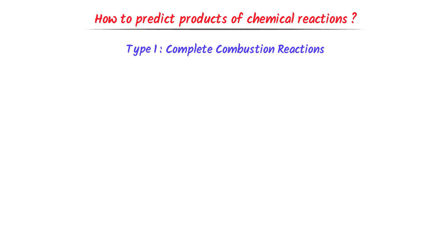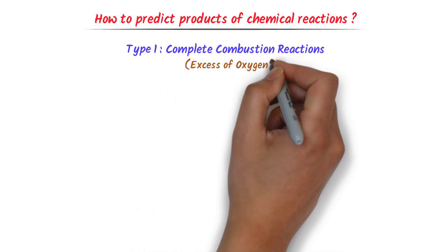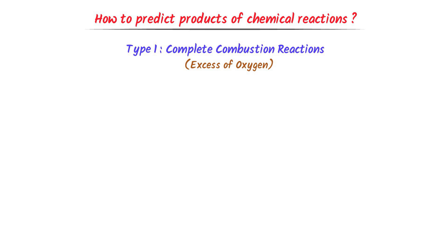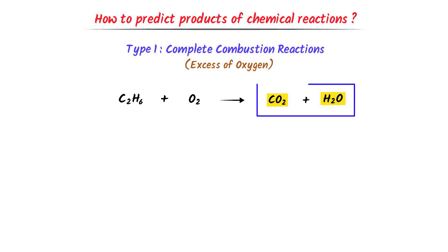These reactions are carried out in the presence of excess oxygen. For example, ethane reacts with oxygen gas. We will always get two products: carbon dioxide gas and water, H₂O. Remember that in case of combustion reactions, we will always get carbon dioxide gas and water as products.